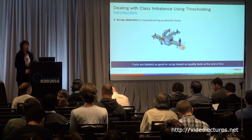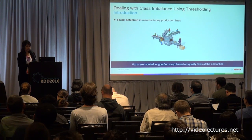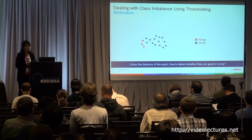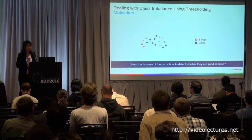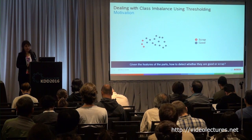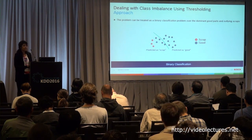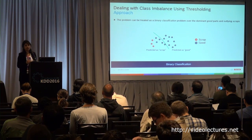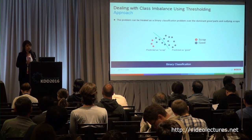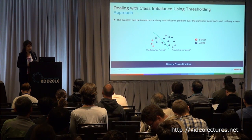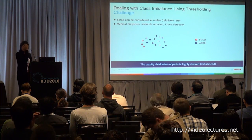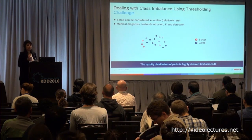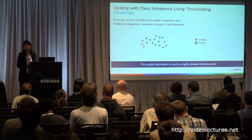This was a real-life use case. What we wanted to do is scrap detection in these manufacturing production lines. Once we translate it into a machine learning problem, given the features of the parts, how do we detect whether they are good or bad? The classical approach would, of course, be binary classification. But in the binary classification problem, we had dominant good parts and outlying scraps — very few scraps. The challenge was that scrap was an outlier, and the quality distribution of parts was highly skewed and highly imbalanced.